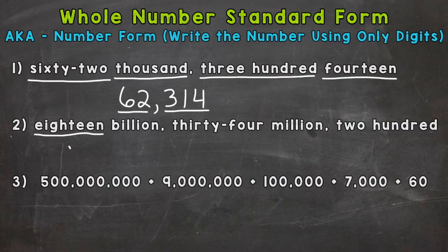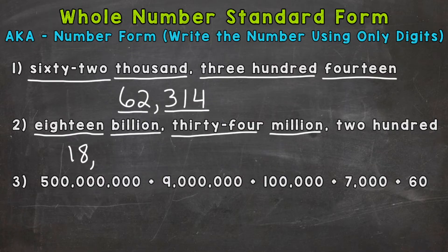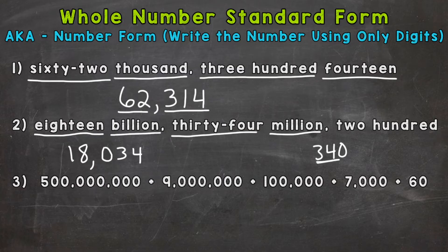We know that 18 is going to be in the billions period. After the billions period comes the millions period — and we have 34 million. So we need a 34 in the millions period: a zero, a three, and a four, giving us 34 million. A common mistake would be writing 340 there and thinking that represents 34 million, but in fact that's 340 million. So be very careful.